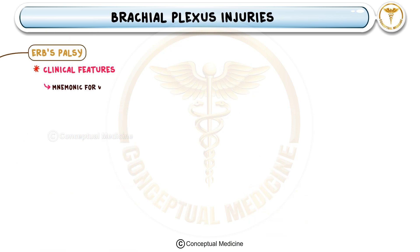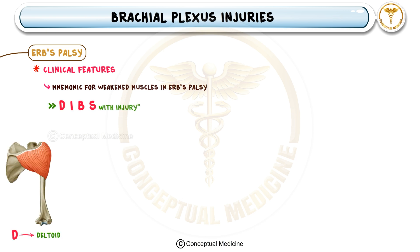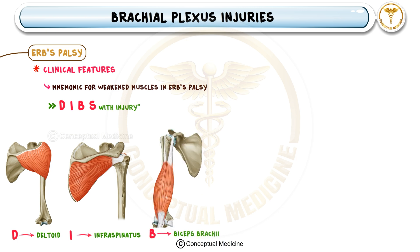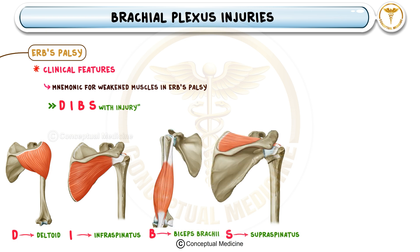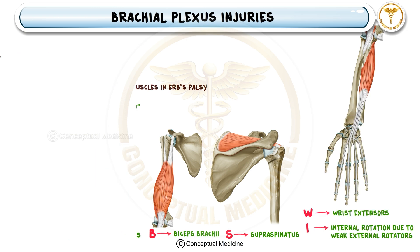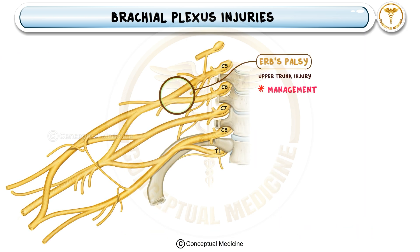A useful mnemonic to remember the weakened muscles in Erb's palsy is DIBSW: D — deltoid, I — infraspinatus, B — biceps brachii, S — supraspinatus, W — wrist extensors.